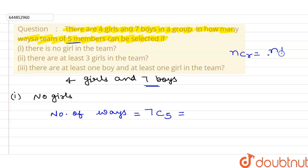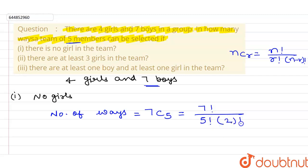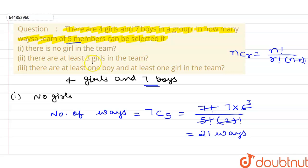We know that nCr can be written as n factorial upon r factorial into (n minus r) factorial. So 7C5 equals 7! / (5! × 2!). Simplifying: (7 × 6) / 2 = 21 ways.